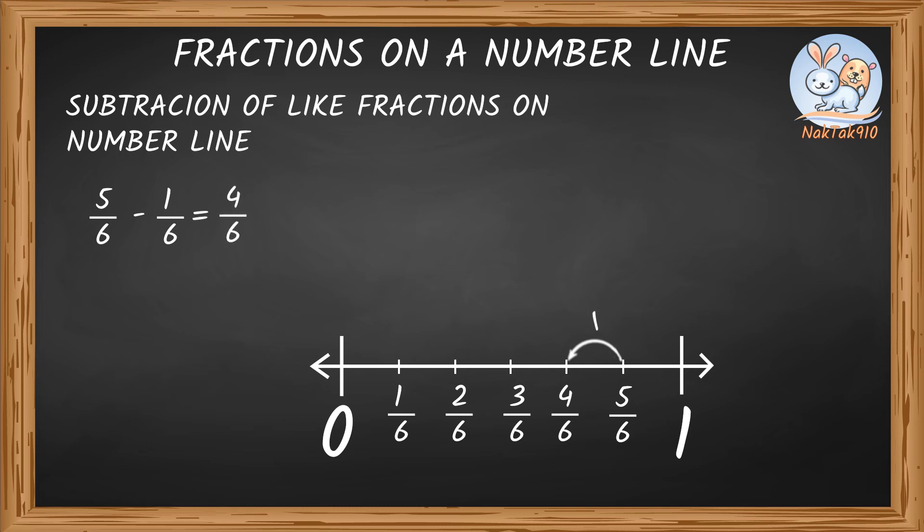Let us subtract our way to check if number line gives us the same right answer. 5 sixths minus 1 sixths. Both are like fractions, so just subtract the numerators. 5 by 6 minus 1 by 6 equals 5 minus 1 over 6, which is equal to 4 by 6. Same as our number line answer.